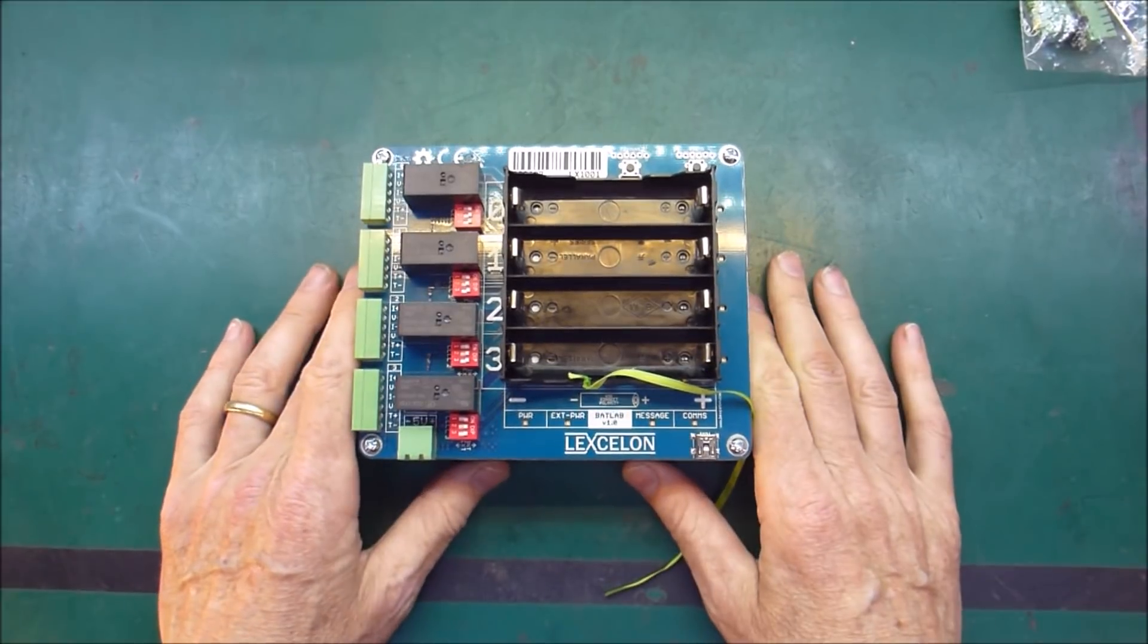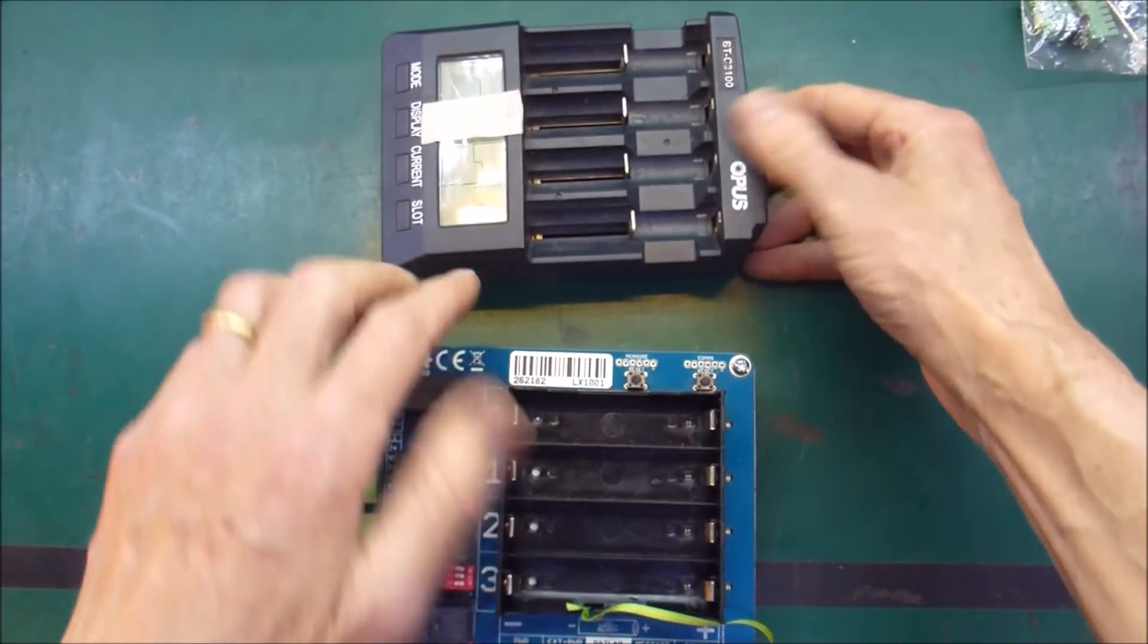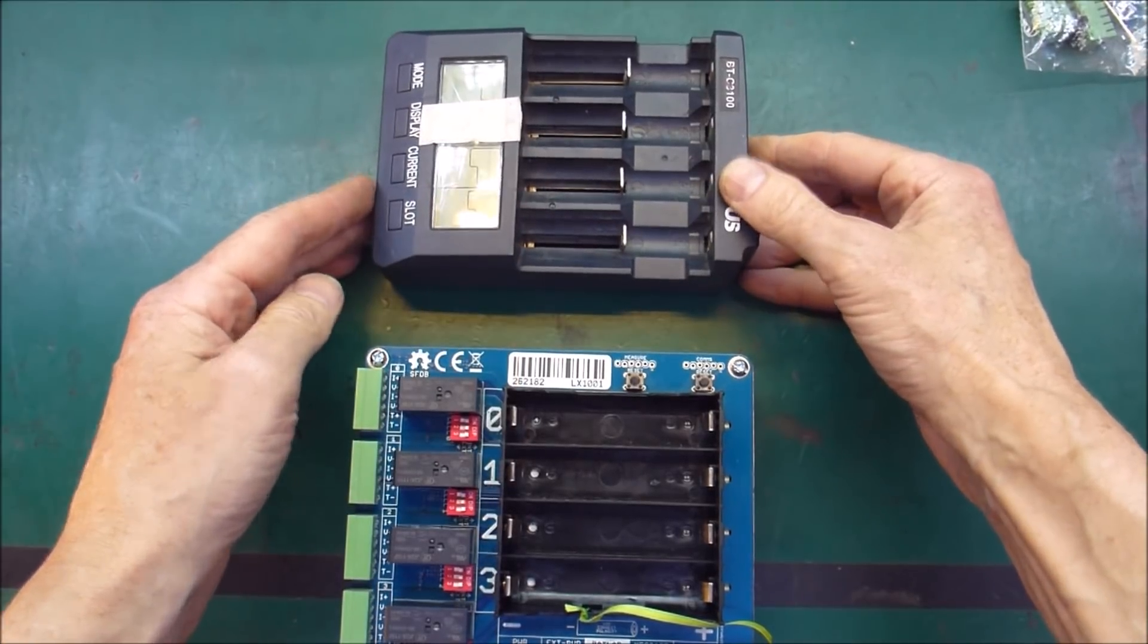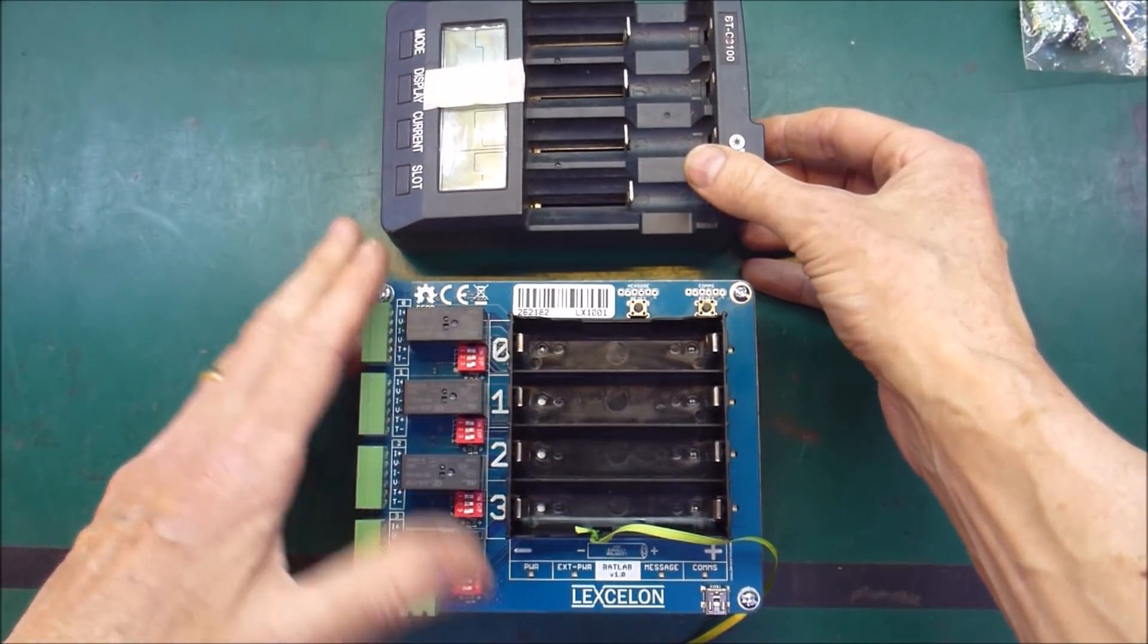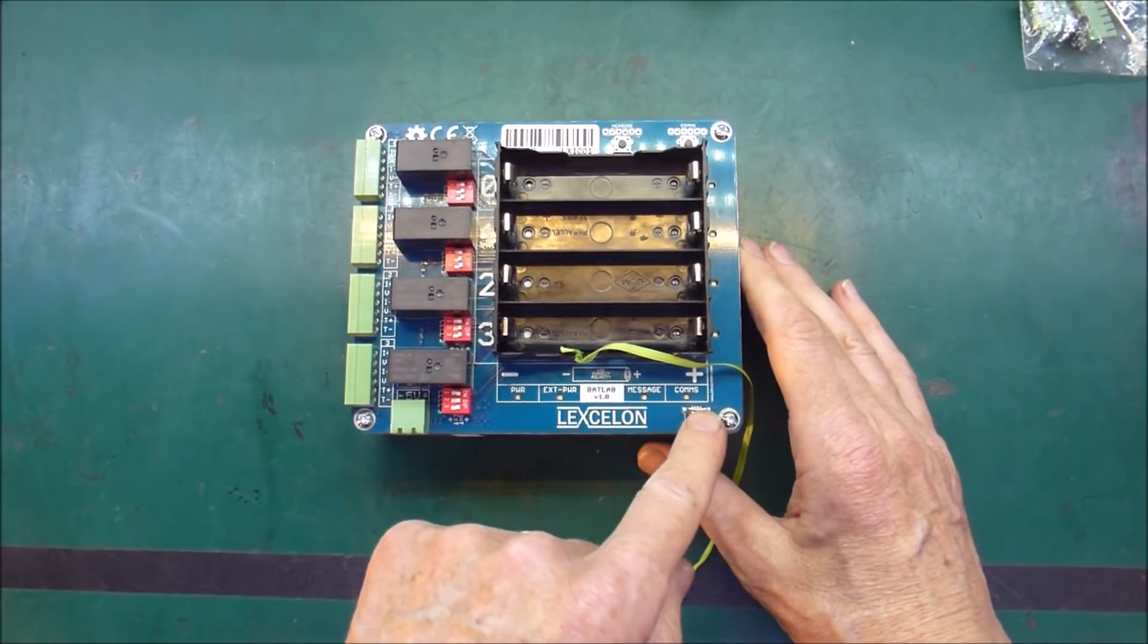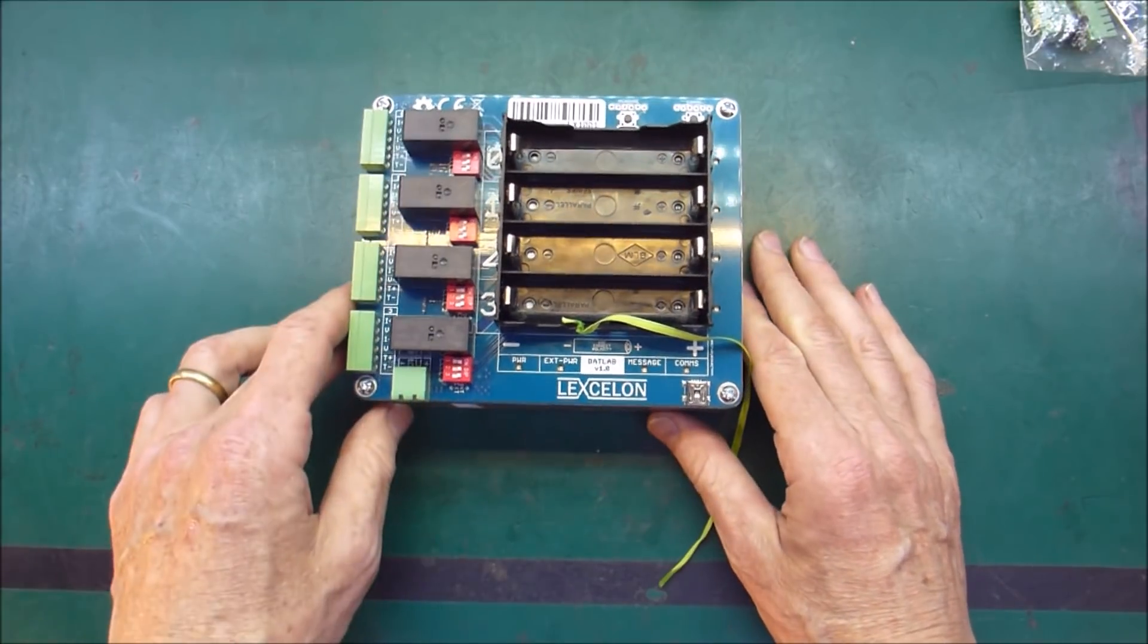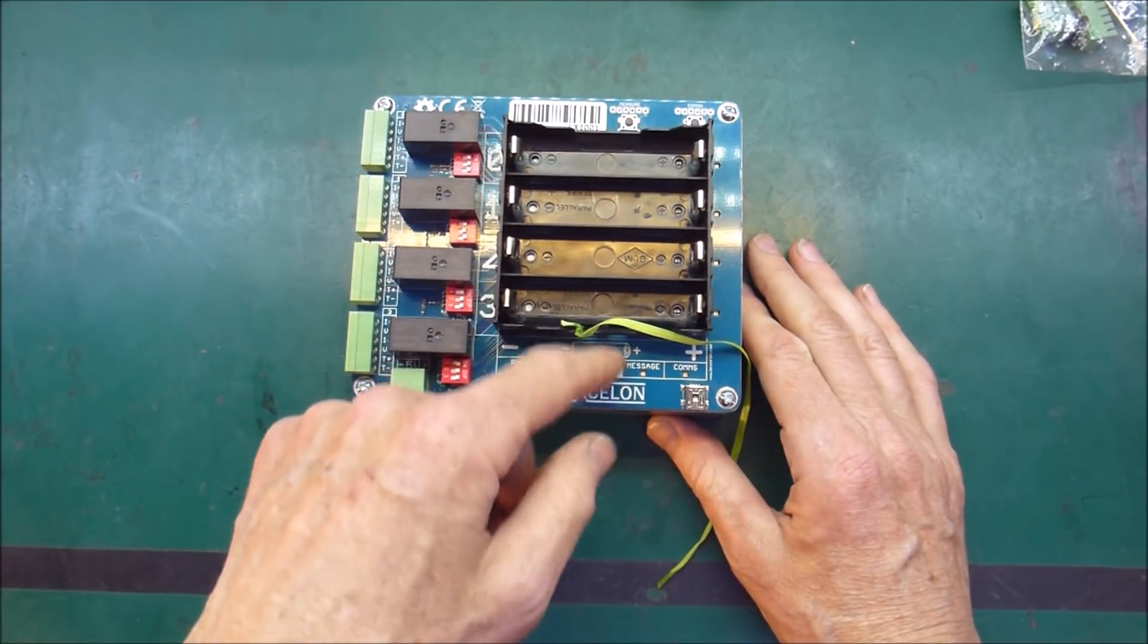So what this will allow me to do is everything that an Opus can do - charge, discharge, and so on. But it also plugs via USB into a laptop so that I can get pretty graphs, discharge curves, all that kind of thing.